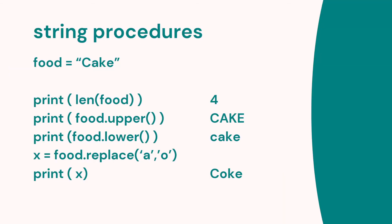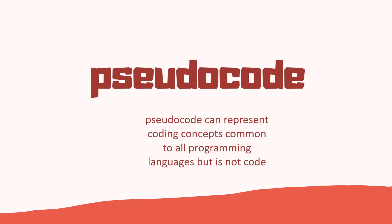There are also string procedures. For example, if food equals 'cake', then the length of food is four — four characters. We can change it to uppercase using food.upper(), or to lowercase using food.lower(). There are other functions in Python such as replace — for example, replacing 'a' with 'o' will change all instances of the letter A in the string, so 'cake' would change to 'coke'.